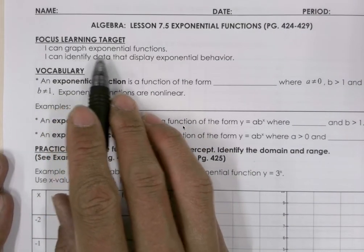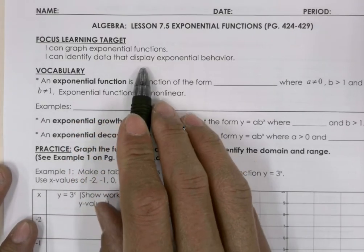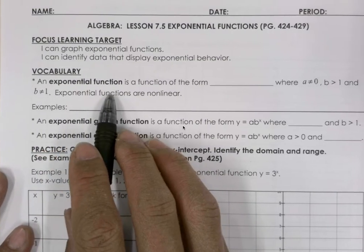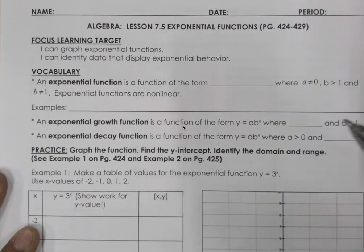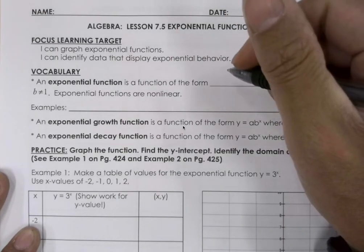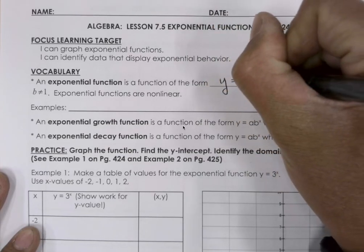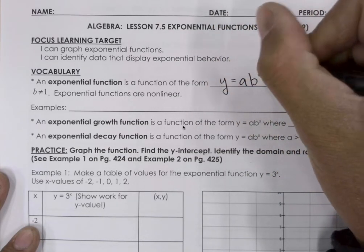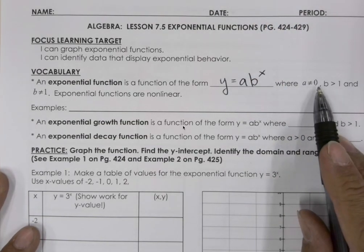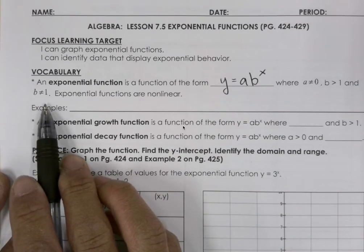The learning targets are: I can graph exponential functions, and I can identify data that displays exponential behavior. The vocabulary: an exponential function is a function of the form y equals a times b to the power of x, where a is not equal to 0, b is greater than 0, and b is not equal to 1.